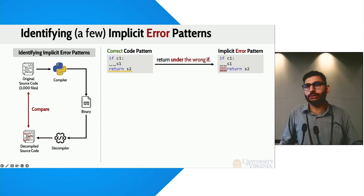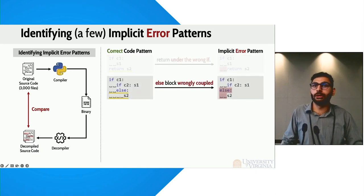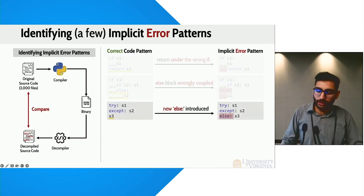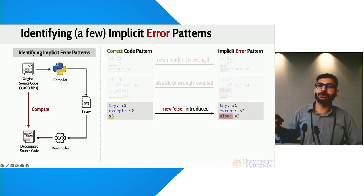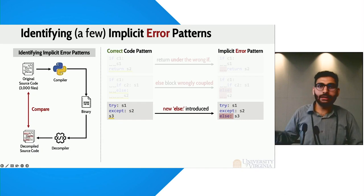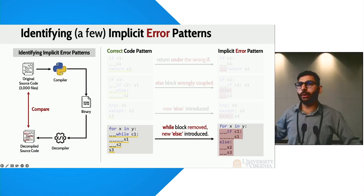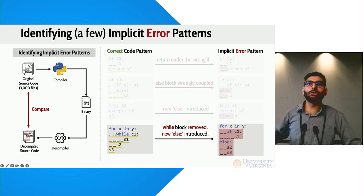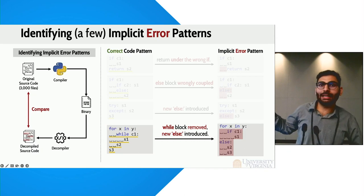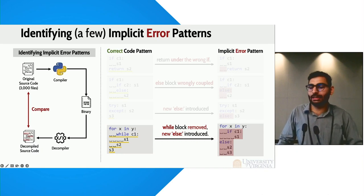What we found were errors where some statements were being coupled within the wrong scope, blocks of code coupled with the wrong scope. We saw more subtle errors where a try-except now has an else block — else block is quite unique to Python for try-except, where it only executes when S1 does not throw an exception. We also found much more aggressive implicit errors: on the left side there were two loops, but on the right there is just one — the second while loop converts into an if condition — and there is an additional else block as well.